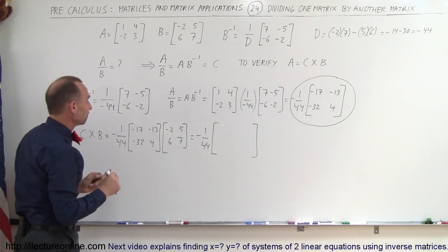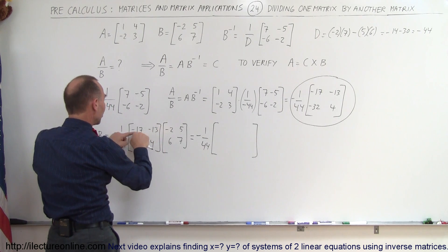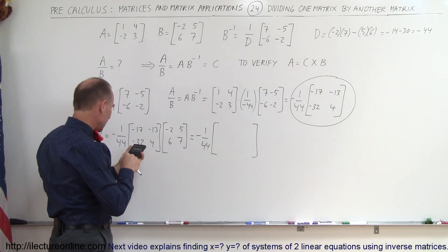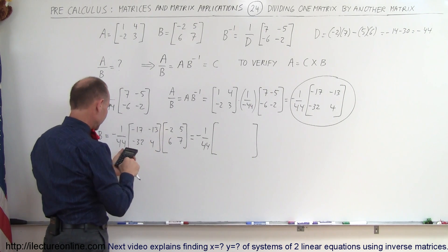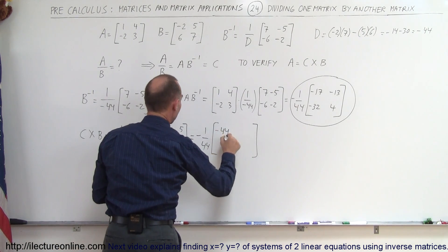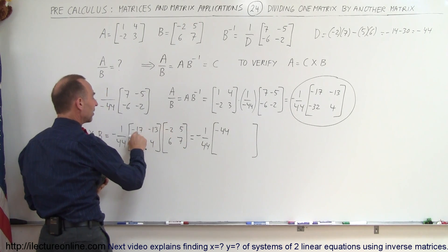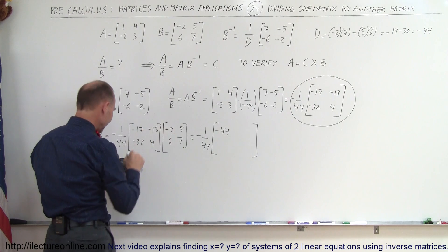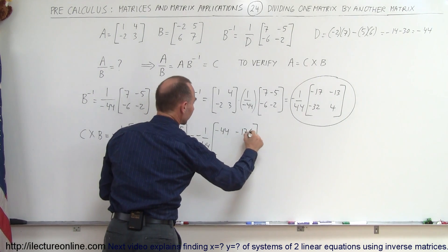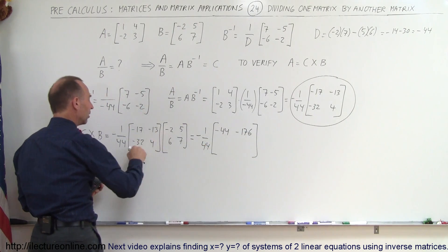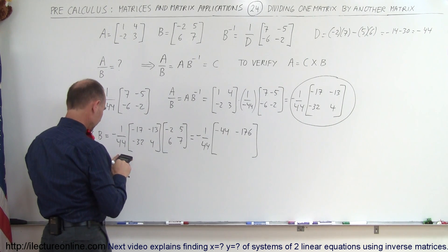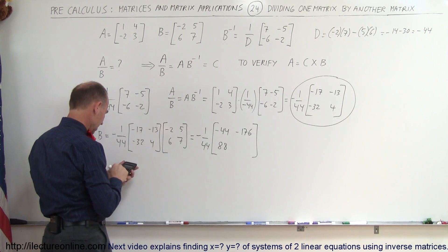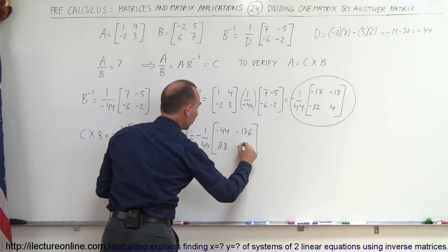We may need a calculator here. Multiplying the first row by the first column: negative 17 times negative 2 is positive 34, and negative 13 times 6 is negative 78, giving 34 minus 78 equals minus 44. First row times second column: minus 17 times 5 is minus 85, plus negative 13 times 7 is minus 91, giving minus 176. Second row times first column: 64 plus 24 equals 88. Second row times second column: minus 160 plus 28 equals minus 132.